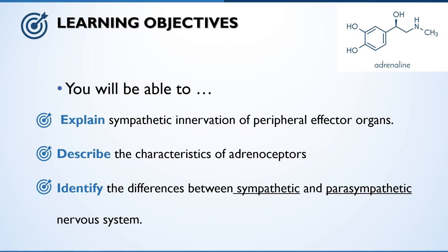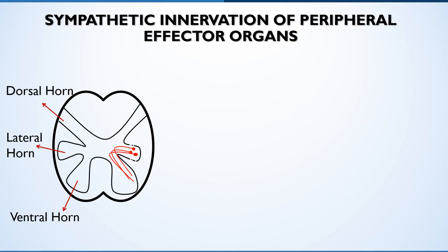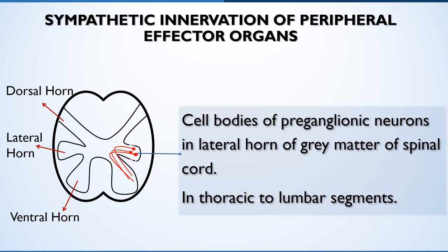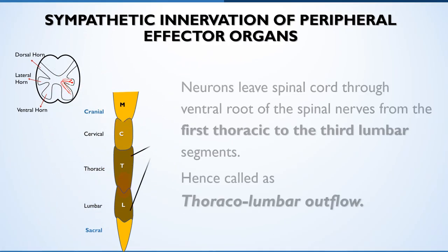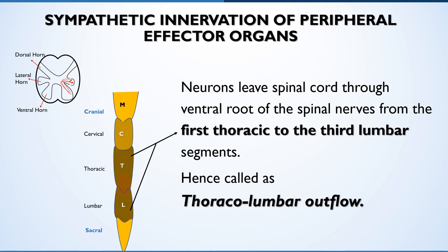Learners will also describe the characteristics of adrenoceptors and identify the differences between sympathetic and parasympathetic nervous system. The sympathetic preganglionic neurons have their cell bodies in the lateral horn of gray matter of the thoracic and lumbar regions of the spinal cord. These neurons leave the spinal cord from the ventral root of the same thoracic and lumbar regions, and hence the sympathetic outflow is called the thoracolumbar outflow.